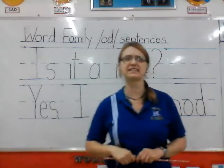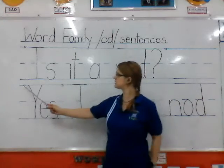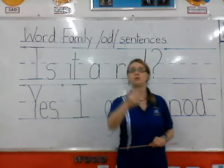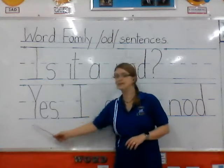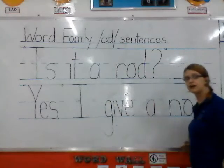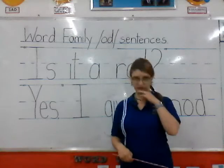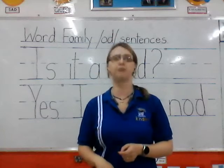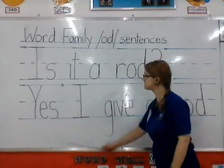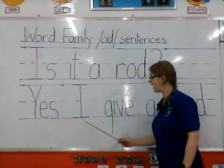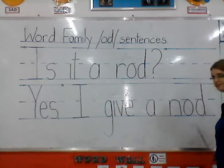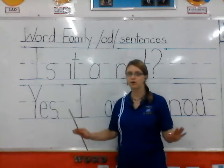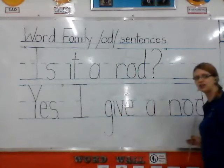Let's move on to the next sentence. You can see there are little inverted commas again, which means this part is someone answering. They say: 'Yes, I give a nod.' This person is saying yes, and a nod means they're nodding their head to show it. So they say the word yes and they show it by nodding their head. Let's read the sentence: 'Yes, I give a nod.' This sentence also has a comma after yes, so you pause, then say 'I give a nod', and there's a stop.